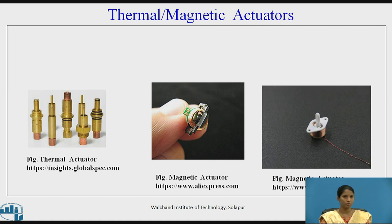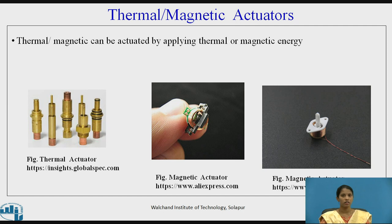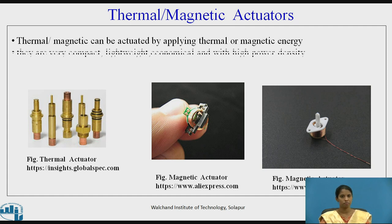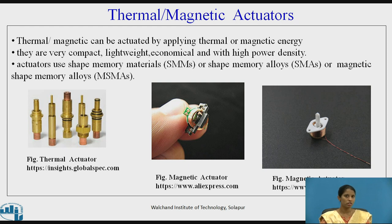The next type is the thermal or magnetic actuator, which can be actuated by applying thermal or magnetic energy. They are very compact, lightweight, economical, and have high power density. These actuators use shape memory materials (SMMs), shape memory alloys (SMAs), or magnetic shape memory alloys. The figures show various thermal actuators and micro/nano magnetic actuators.